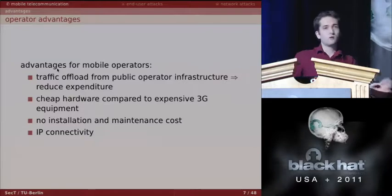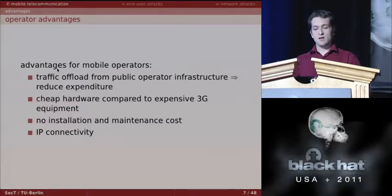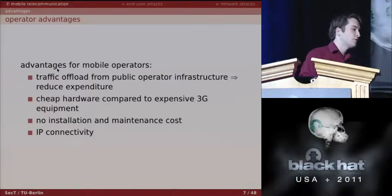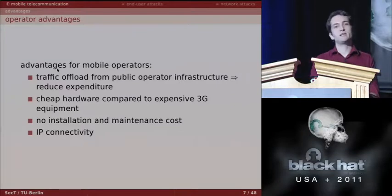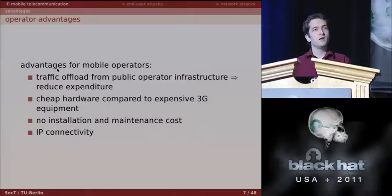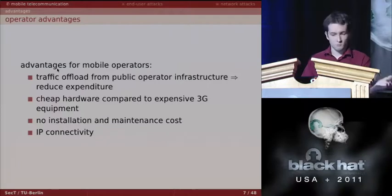Femtocells are cheap — hardware costs around $100–$200 depending on the operator. They're also cheap to maintain: the operator sends it to you, you pay for it, you install it at home. If there's a problem, the operator won't send a repair team. Additionally, femtocells enable IP connectivity: previously telecommunication systems used PSTN switched networks, but now everything goes through IP because it's cheap and works well enough.